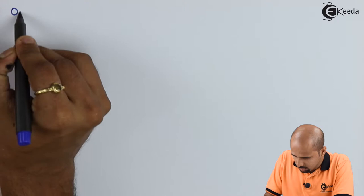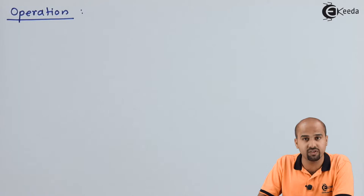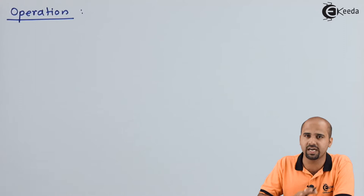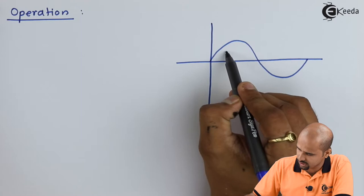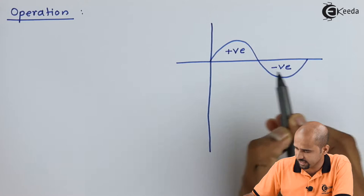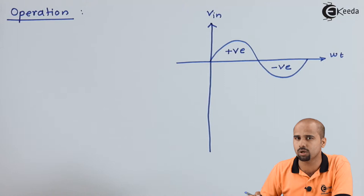Under the operation of this half wave rectifier, we will understand the fact that we are giving an AC input signal which consists of a positive half cycle as well as a negative half cycle in the total time duration. This is the simple AC input signal where the positive half cycle and negative half cycle make up Vin plotted against omega t. We have to find out what the output signal will be, and I will draw it operation by operation.